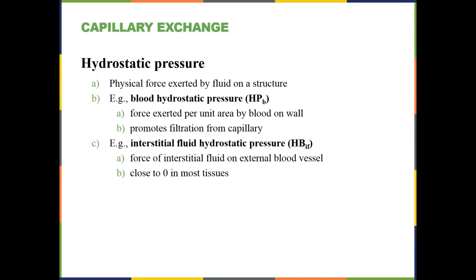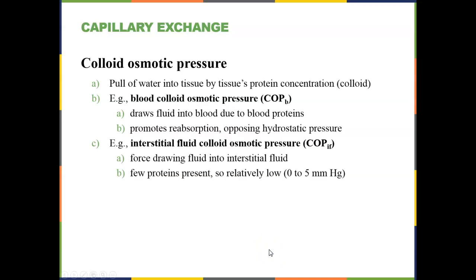We have hydrostatic pressure and colloid osmotic pressure. In our blood, we have a very high hydrostatic pressure, and this is going to force fluids out along with those solutes dissolved in the fluids. The interstitial fluid hydrostatic pressure is very low, so not as much force is pushing fluids from the interstitial regions into the blood, which means we're going to have more fluids leaving than entering. In our blood, proteins like albumin give us a higher colloid osmotic pressure.